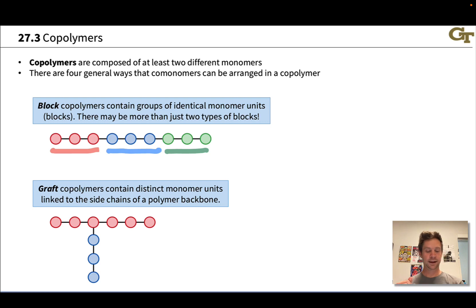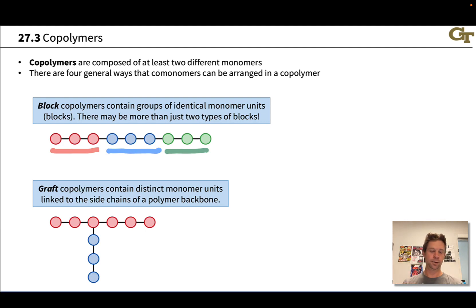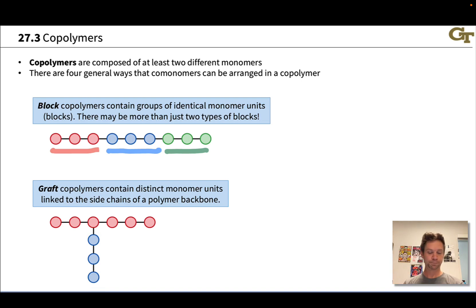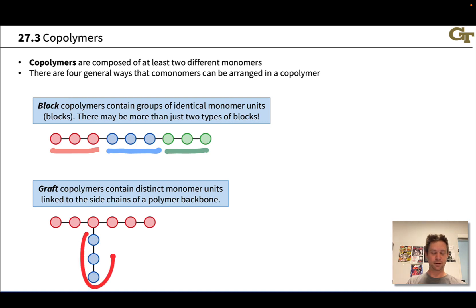Graft copolymers contain a polymer backbone with chains branching from that backbone that are grafted onto the main chain. We can think of it as a main chain of red monomer units, with a grafted side chain branching off — but the side chain is itself a polymer. We have distinct monomer units in blue linked to the side chains of the polymer backbone. There are different ways to grow that grafted polymer side chain off the main chain, or we could pre-polymerize it and then link it onto the red chain.